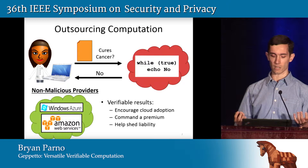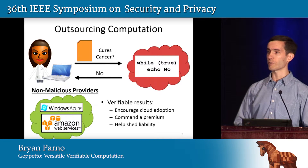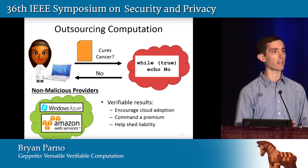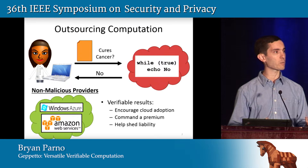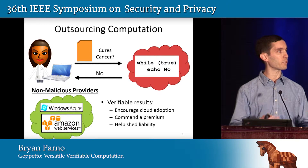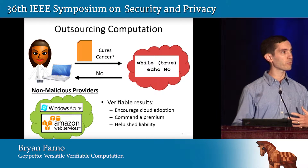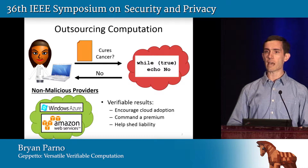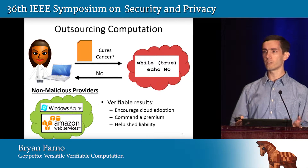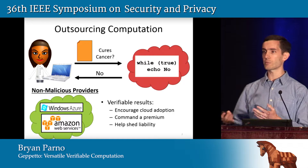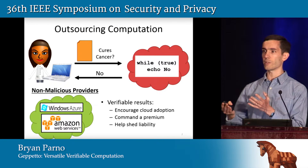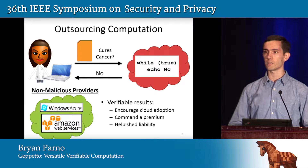Even from the perspective of a non-malicious provider — we like to think that places like Azure and Amazon are not in fact malicious — it can be desirable to be able to prove that you did the correct computation, both to instill confidence in your customers and potentially to help shed liability. So if a customer is upset with the outputs he's getting from the cloud, it would be nice to prove that those outputs came from the inputs he provided and not a mistake on the provider's part.